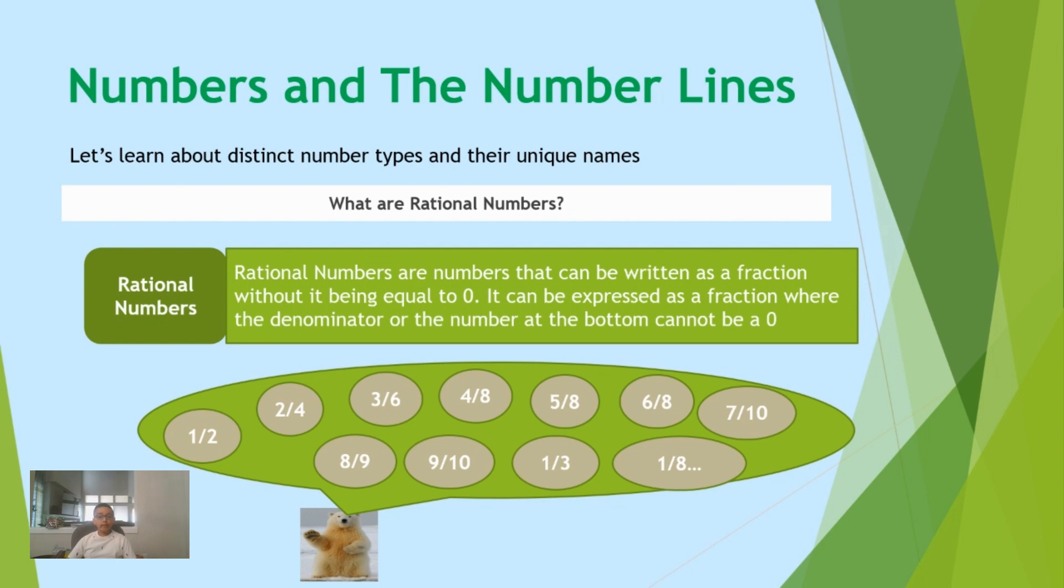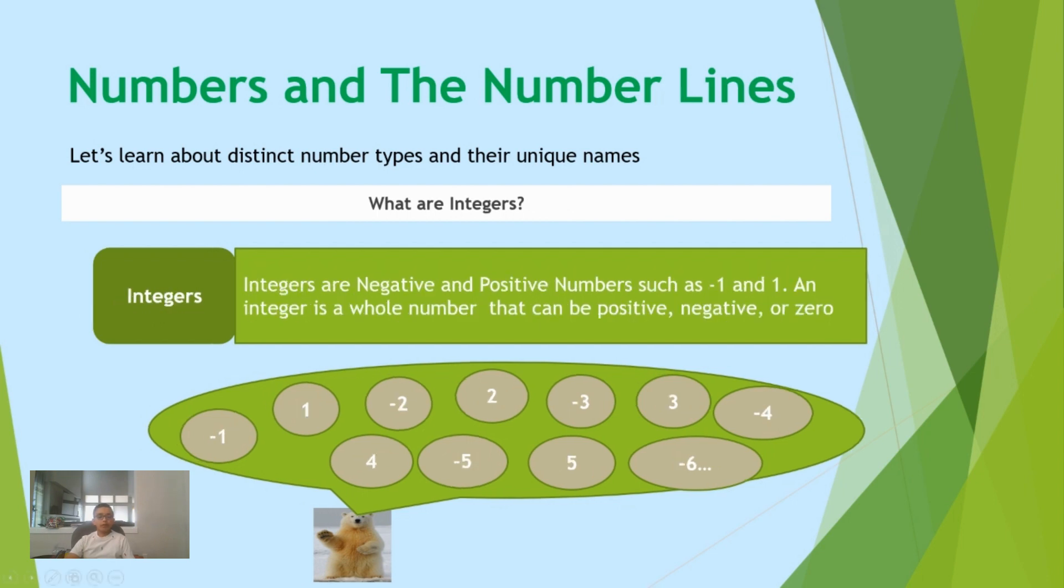What are integers? Well, integers are negative numbers and positive numbers like -1 and 1.